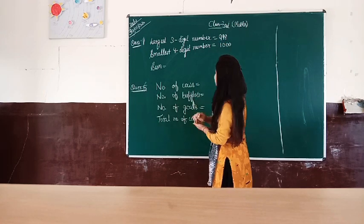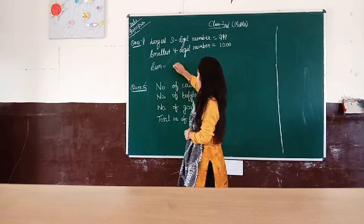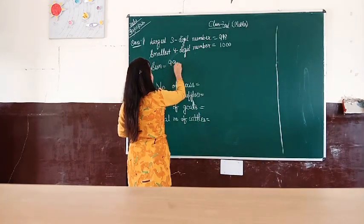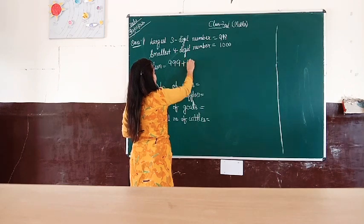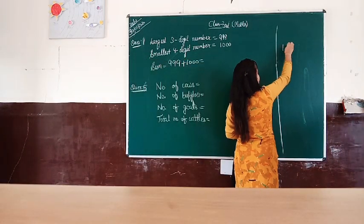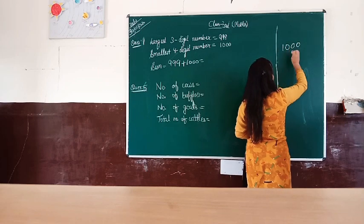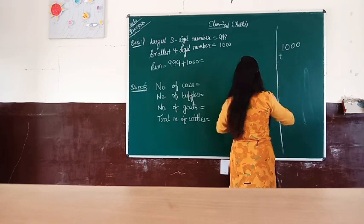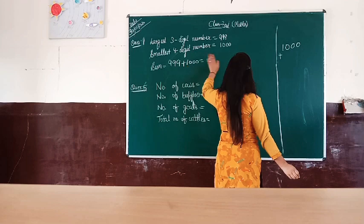Now we need to find the sum. Then 999 plus 1000. We need to find the sum, so it is 1000. And next, now we have 999 to add.